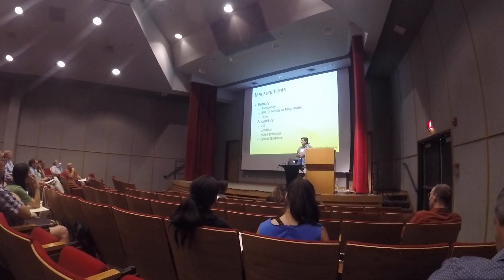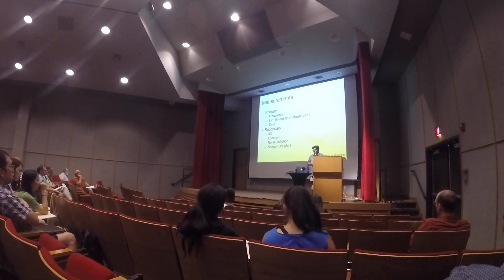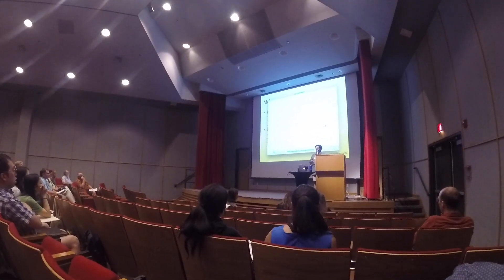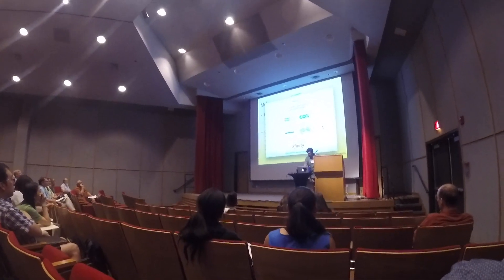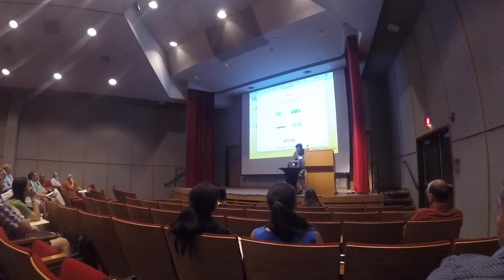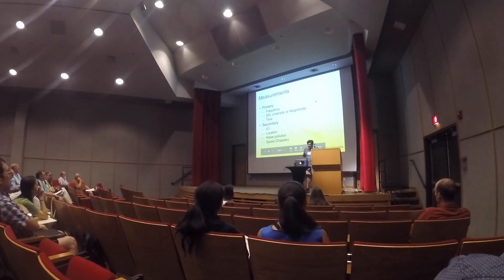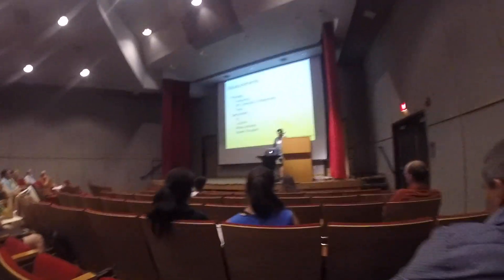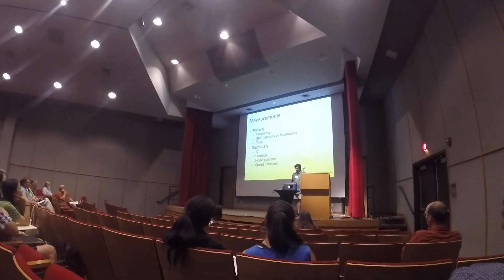Frequency is a measurement, and therefore it can have an uncertainty attached to it. SPL — intensity or magnitude — is a measurement, and therefore it can have an uncertainty attached to it. And time is also a measurement, and therefore it can have an uncertainty and a number attached to it.